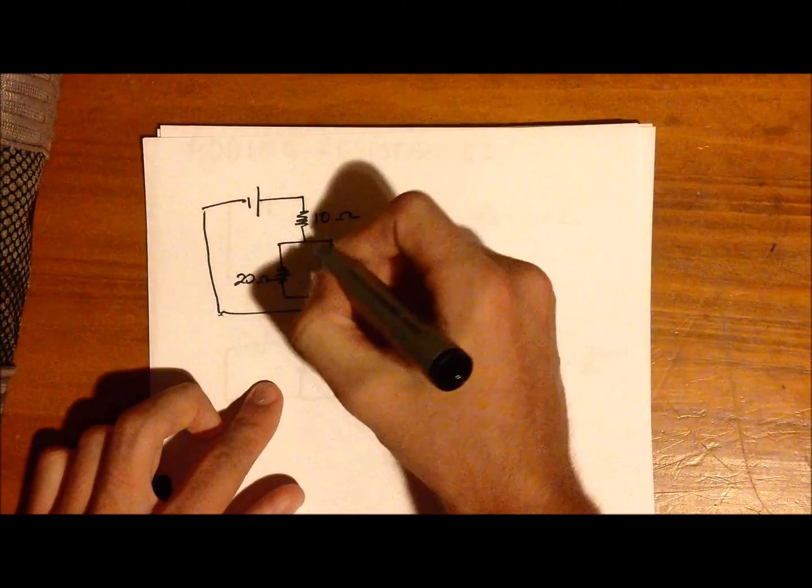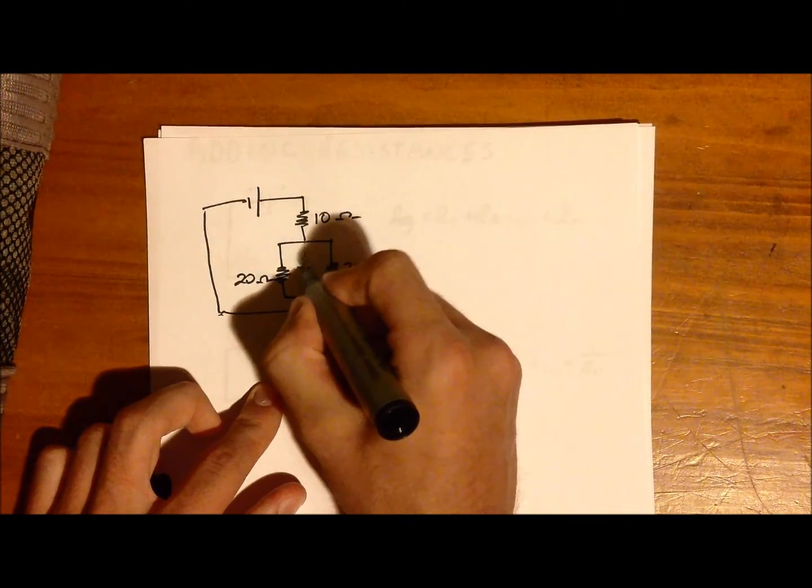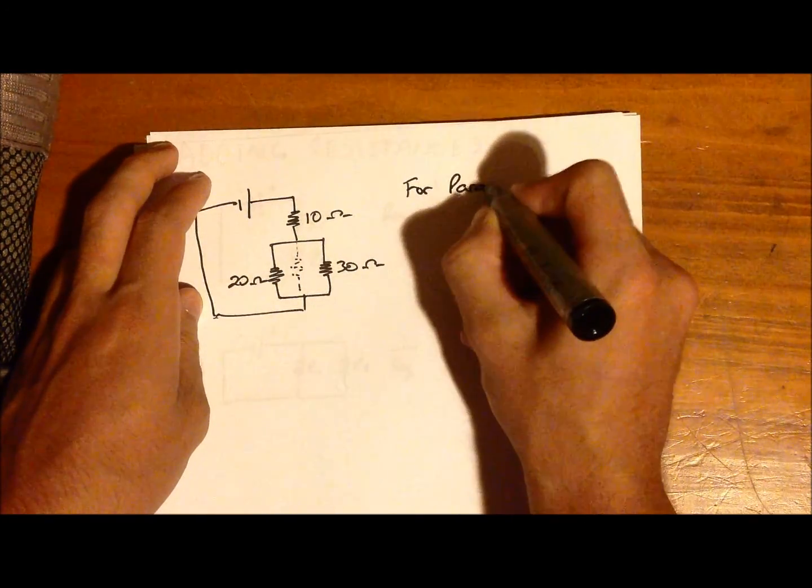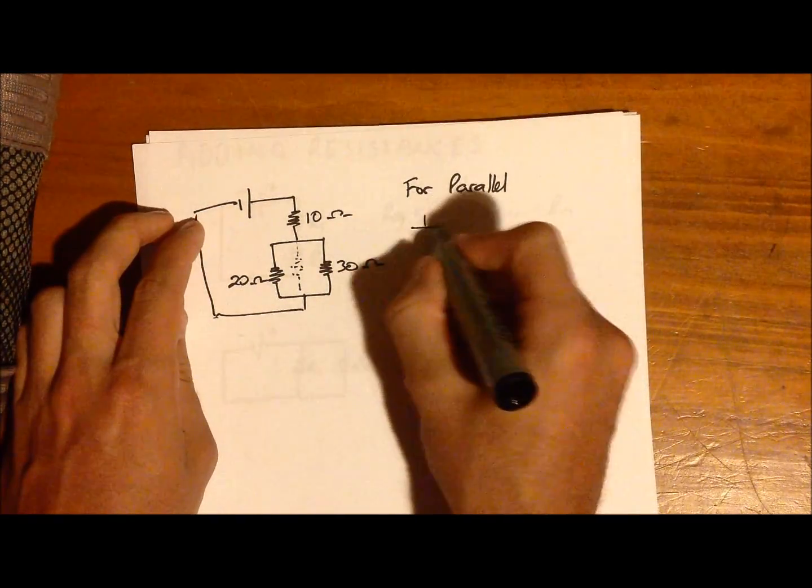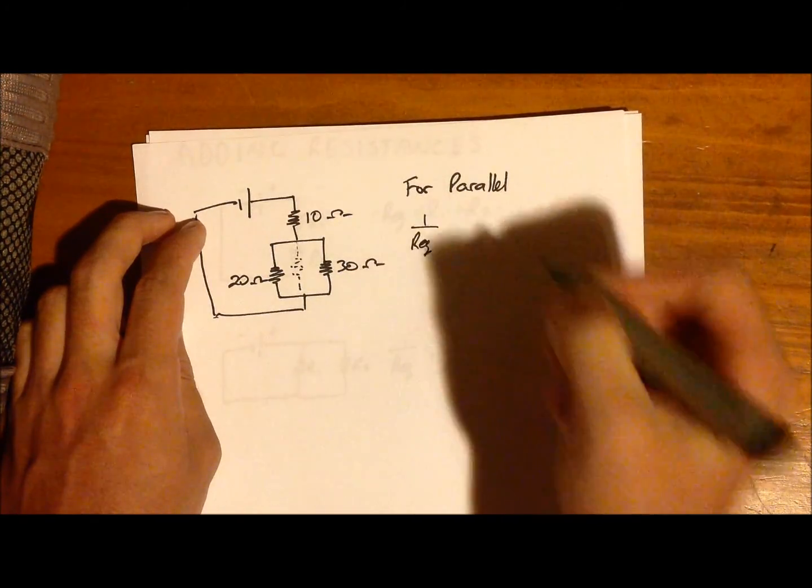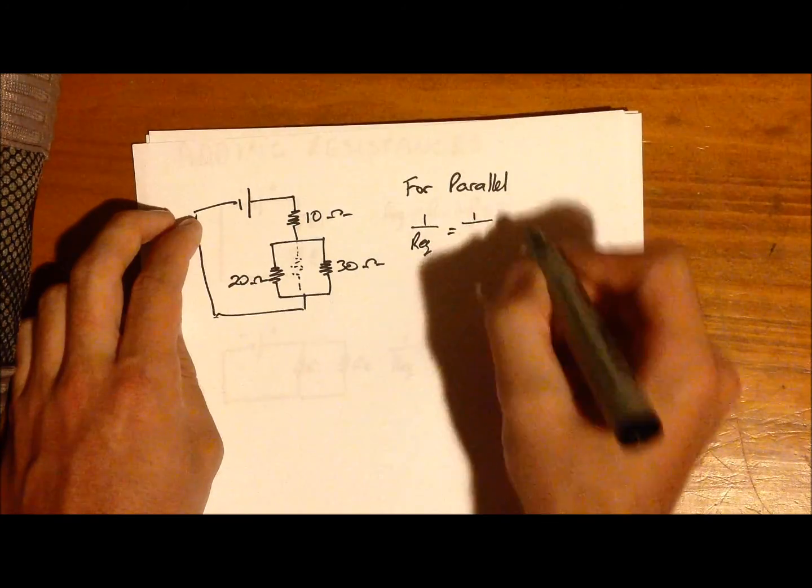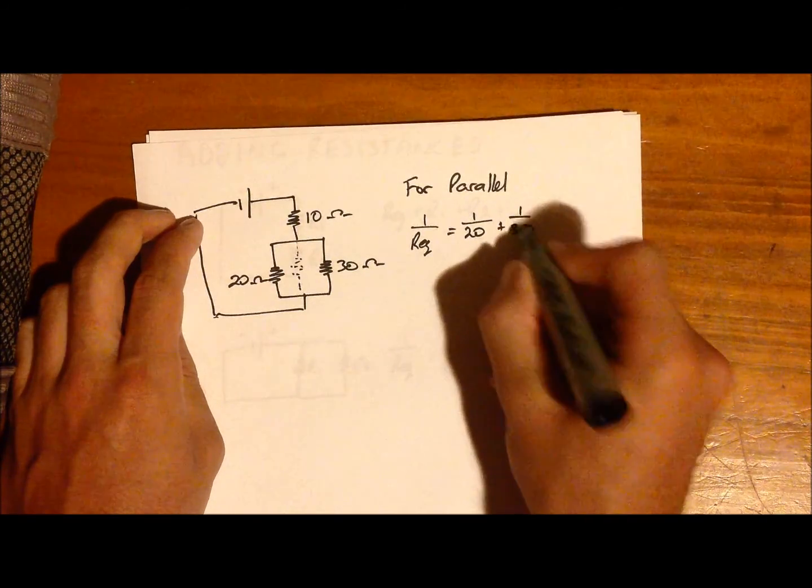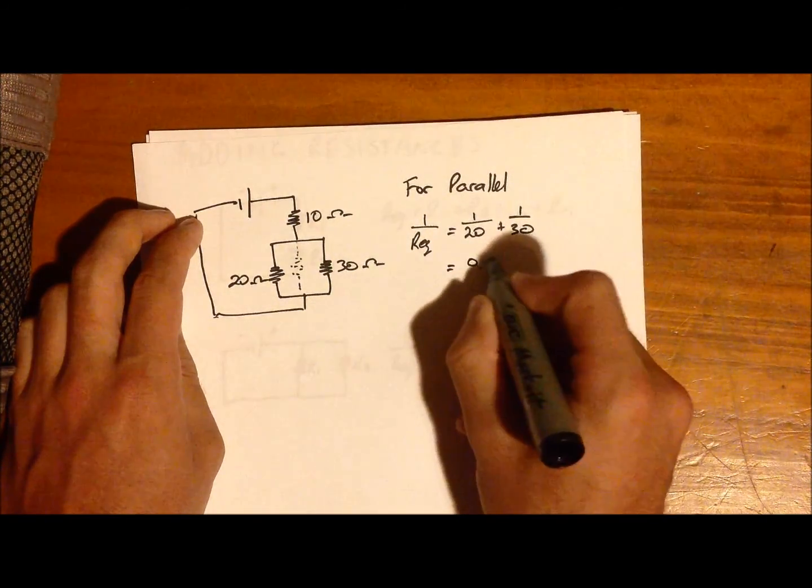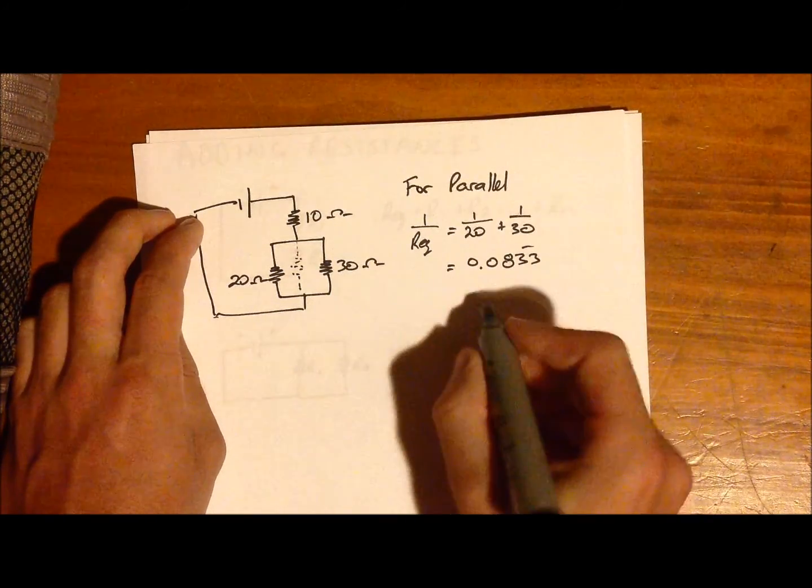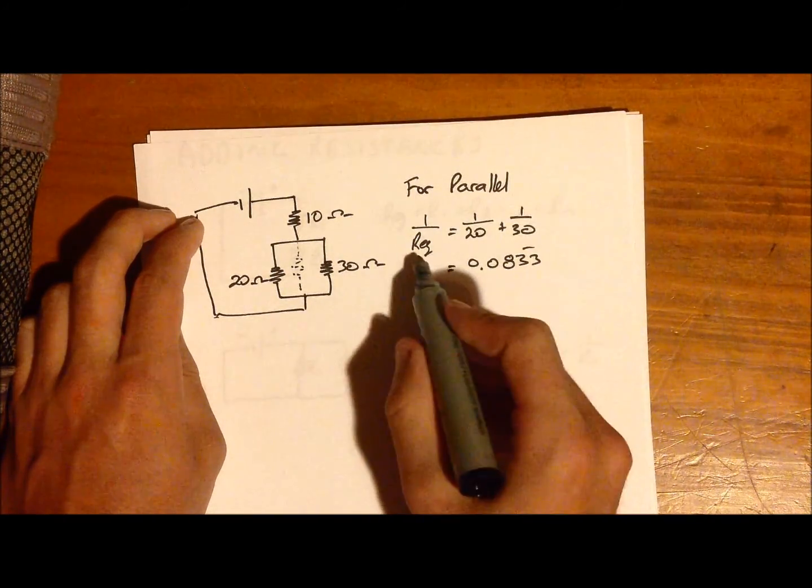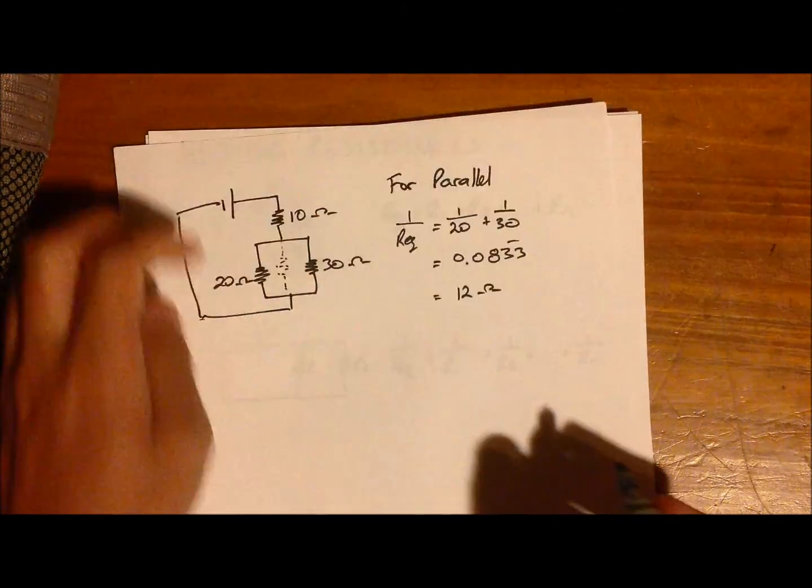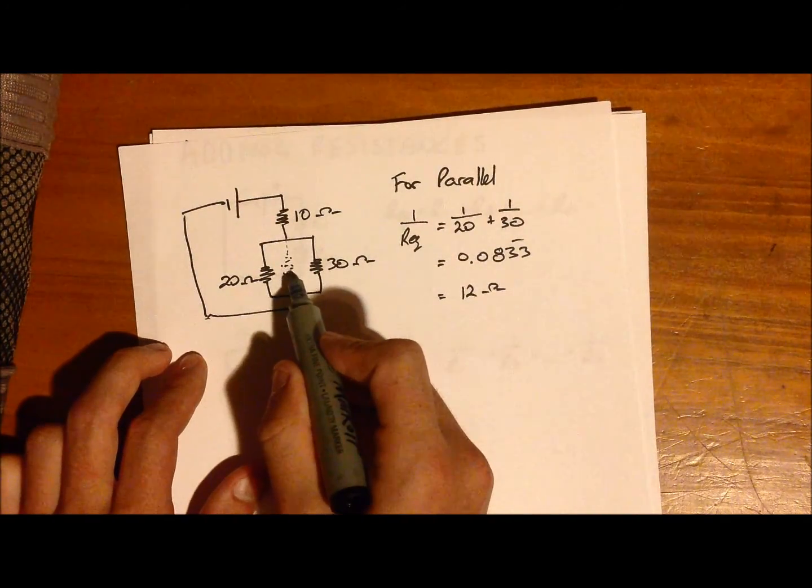So I'll start off with the parallel, so we can add an equivalent one here. For the parallel, we use our equation before. So the reciprocal of Req is equal to the reciprocal of 20, plus the reciprocal of 30, which is equal to 0.0833 recurring. And then to get the Req value, we just take the reciprocal of this, which comes to roughly 12 ohms. So that's just for the equivalent of the parallel.